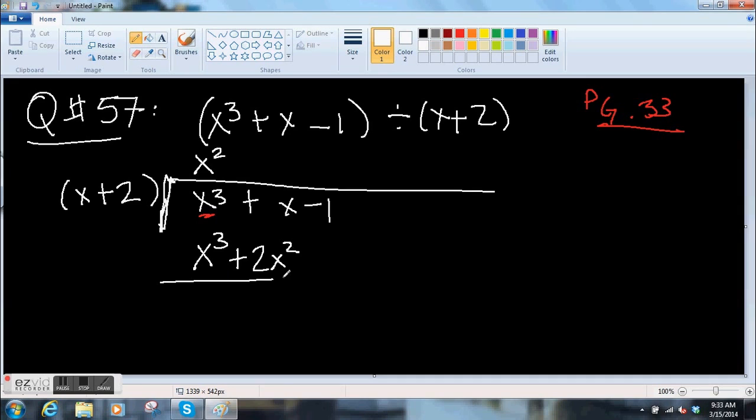So we take x squared and we multiply it by these guys. So that gives us x cubed, right? x squared times x plus 2 times x squared. And then we subtract it. This is similar to doing long division by hand, which I'm sure you do every morning for practice. So this is x cubed minus x cubed. That's zero. And then there's minus 2x cubed.